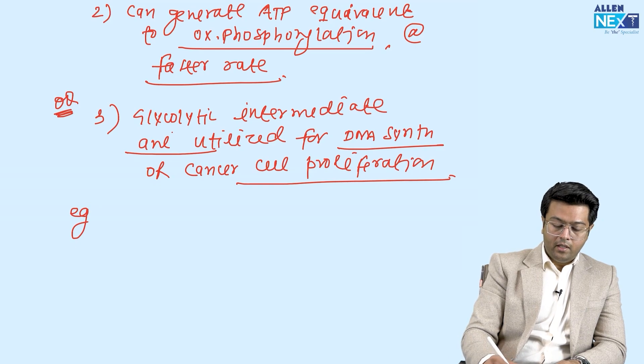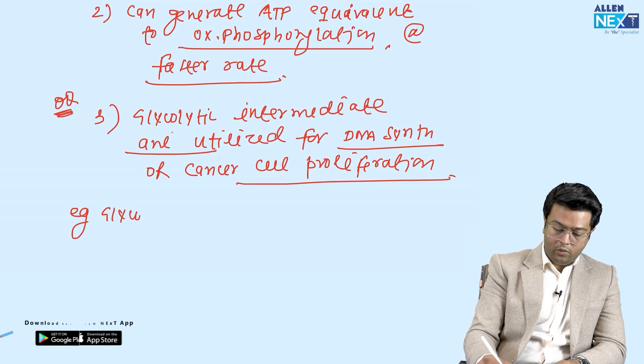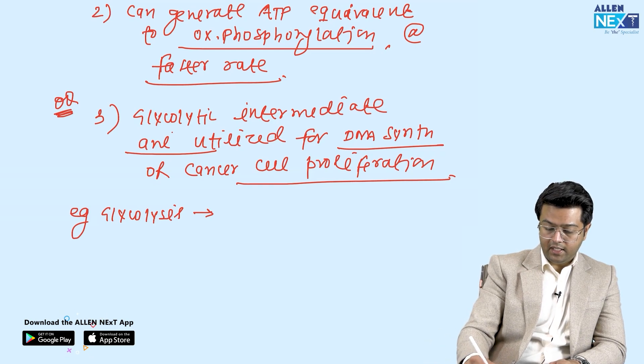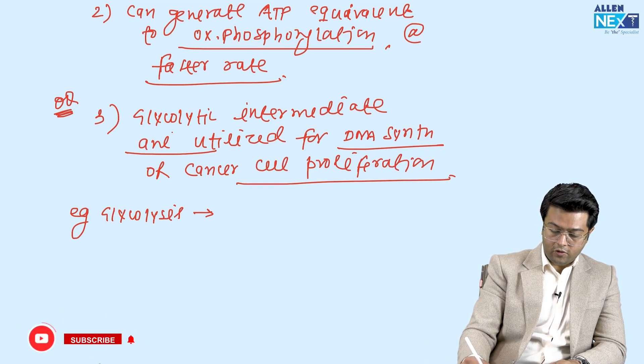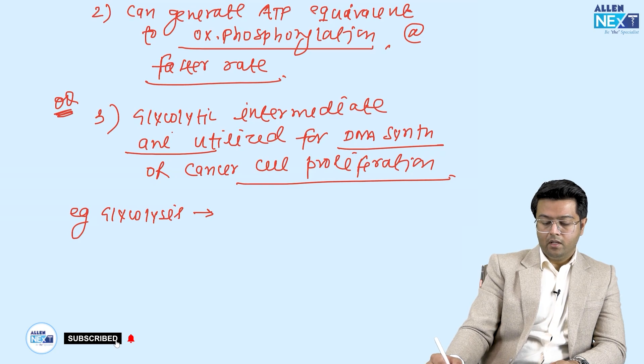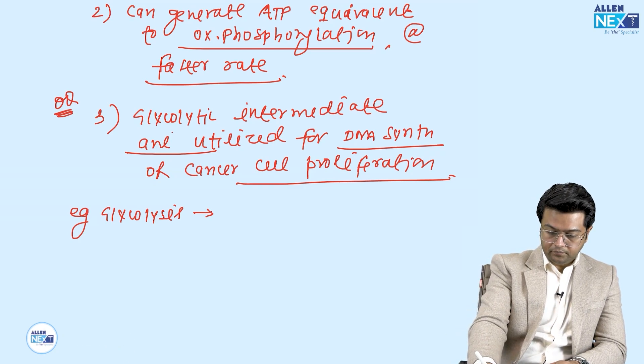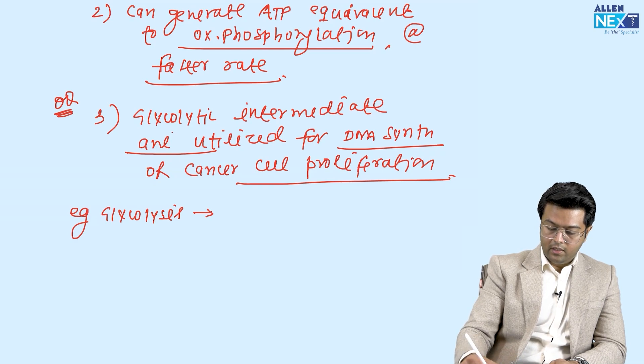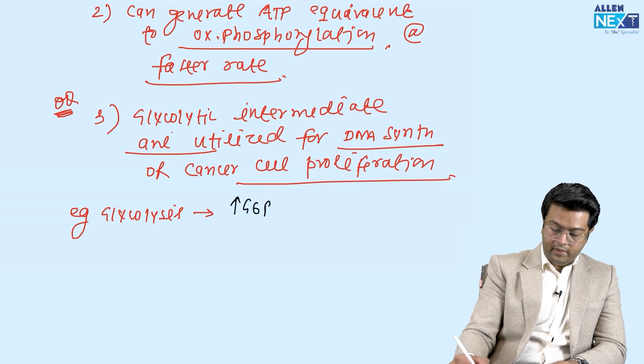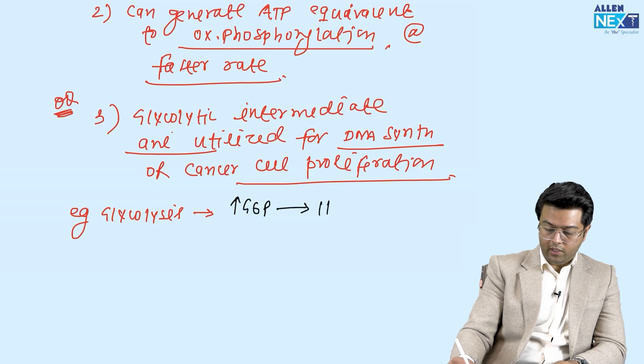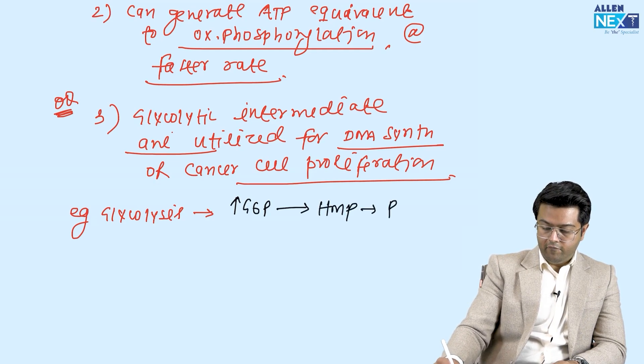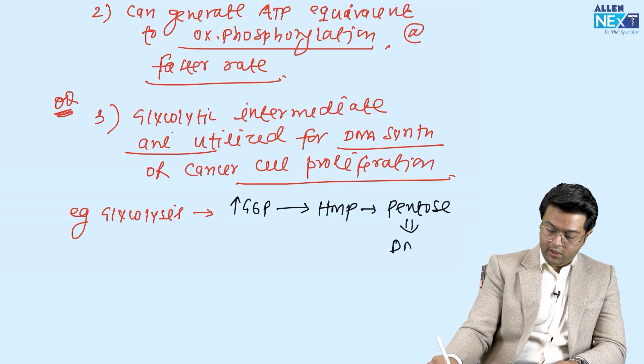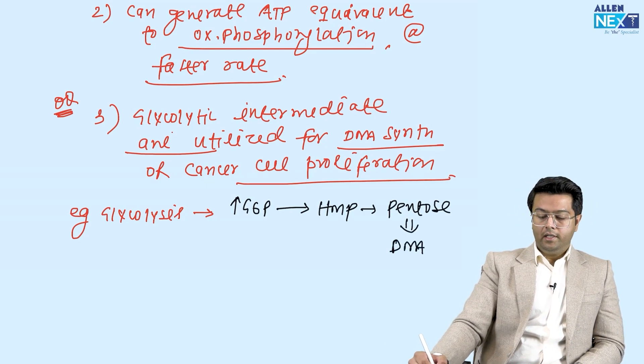For example, during the glycolysis, the cancer cells in this case will produce large amounts of, let us say, G6P. And this G6P can be utilized in HMP pathway. And HMP pathway will make the pentoses. Pentoses will make the DNA.